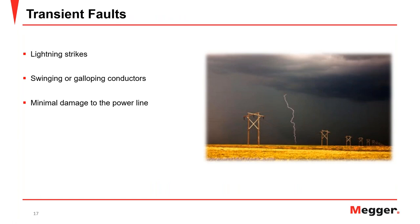Transient faults are most commonly caused by lightning strikes and swinging conductors. These faults tend to last only milliseconds or a few cycles of the system. They cause minimal damage to the power line and tend to clear themselves. Protection functions can still pick up these faults, sometimes open the line, and then restore power automatically.